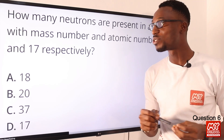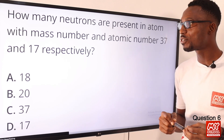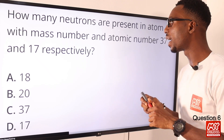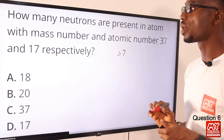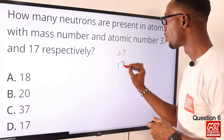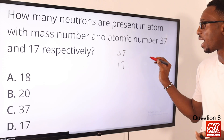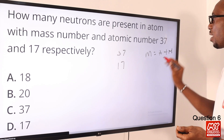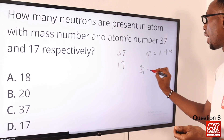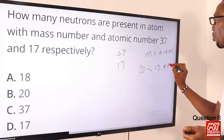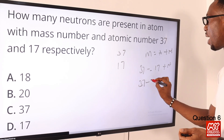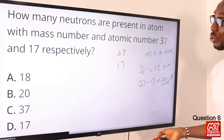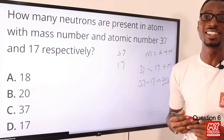Question six: how many neutrons are present in an atom with mass number 37 and atomic number 17 respectively? We are told the mass number is 37 and the atomic number is 17. Recall that mass number equals atomic number plus neutron number. So: 37 minus 17 equals 20. The neutron number is 20. Option B is the right option.